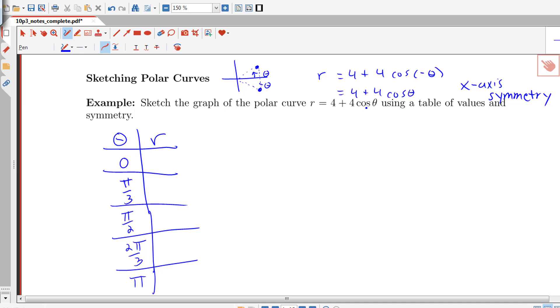When theta is 0, I know that cosine of 0 is 1, so this will be 8. At pi thirds, it's 1 half, so I get 6. At pi over 2 is 0, so this is 4. At 2 pi thirds, it would be negative 1 half, so this would be 2. And at pi, cosine of pi is negative 1, so I'd have 4 minus 4, so I get 0 here.